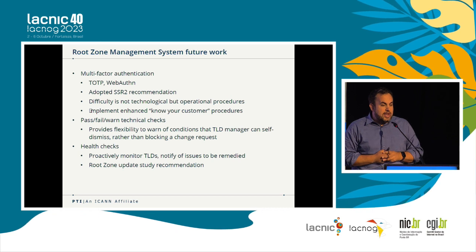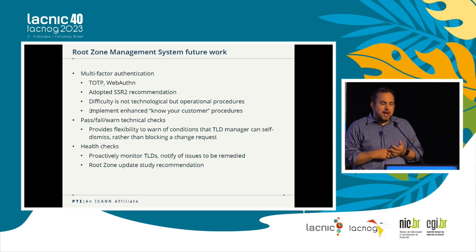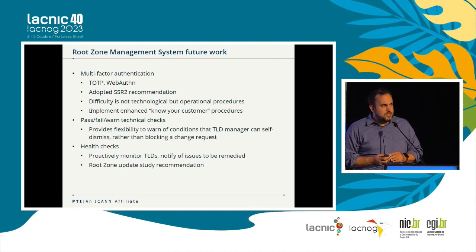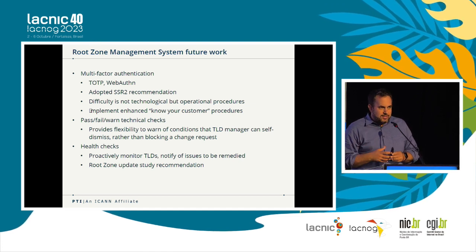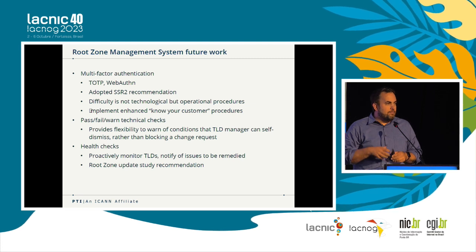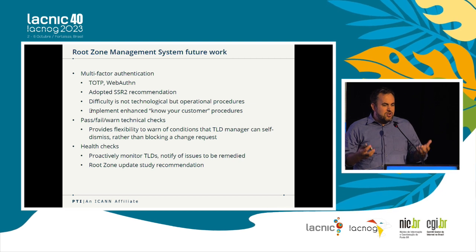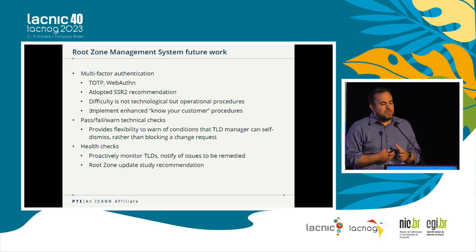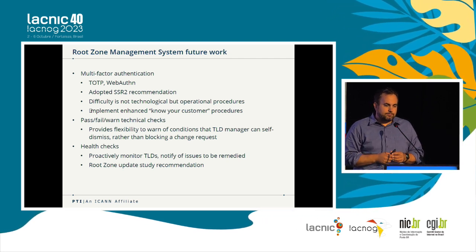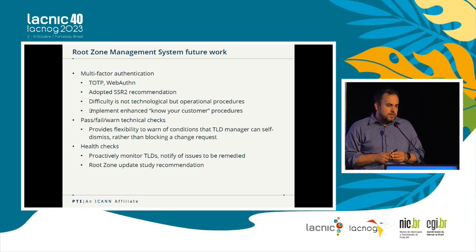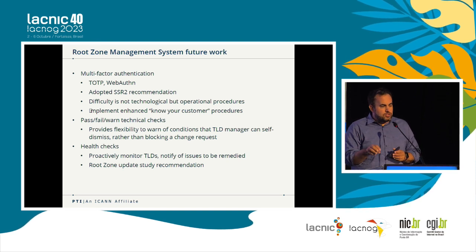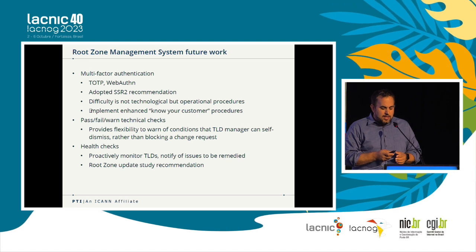We're not finished evolving this system. We're now working on things like multi-factor authentication. It might sound a little odd that we don't have this already. The truth is we do have multi-factor authentication, just not a conventional implementation. We're looking to add common ways people are used to using MFA — things like TOTP, like Google Authenticator, pass keys, that kind of thing. Our biggest challenge is that we don't actually know all of our customers on a first-name basis, so we're implementing operational procedures to enhance our know-your-customer processes before we implement that. We're also looking at other technical check improvements — proactively notifying TLDs of problems and offering solutions on how to fix them.